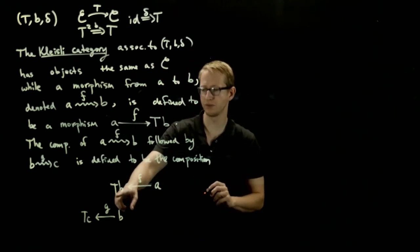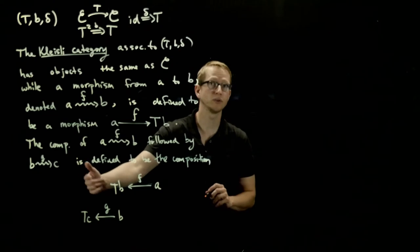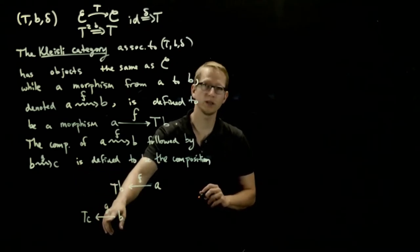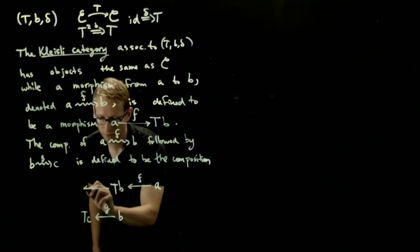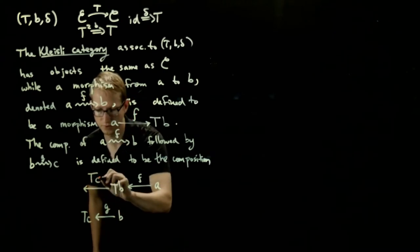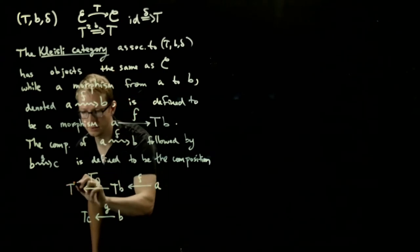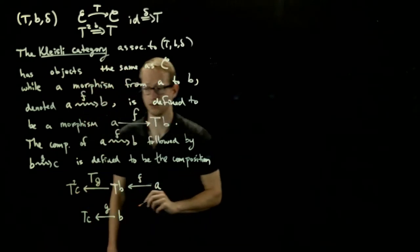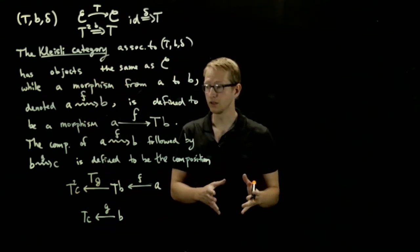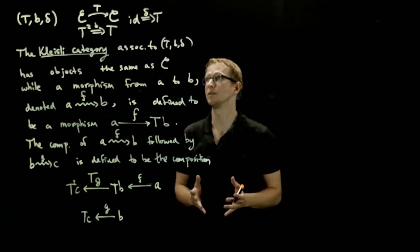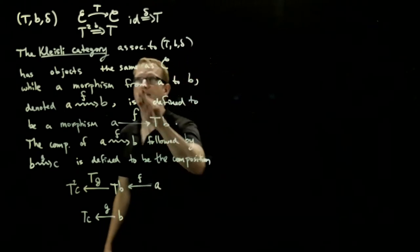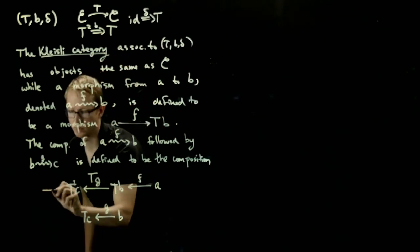If we wanted to have a map from TB to something associated to C, what we can do is apply our functor T to this. T, G. And this lands us in T squared of C. Now, this isn't exactly T of C, so we have to get back down to TC, but fortunately we have a morphism that'll help us do that, and that's coming from our natural transformation B.